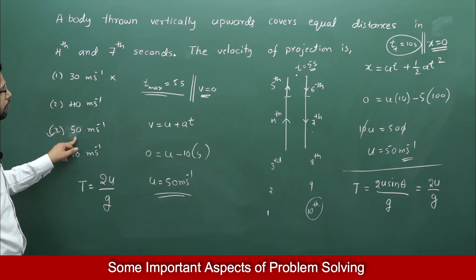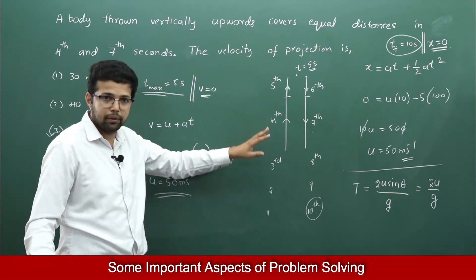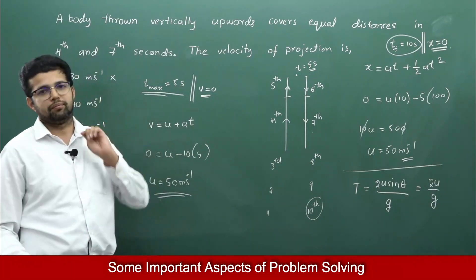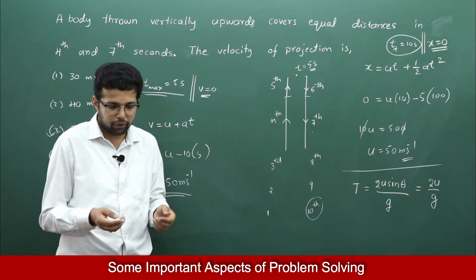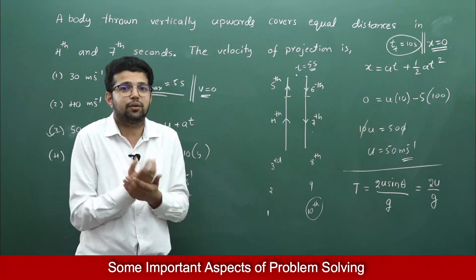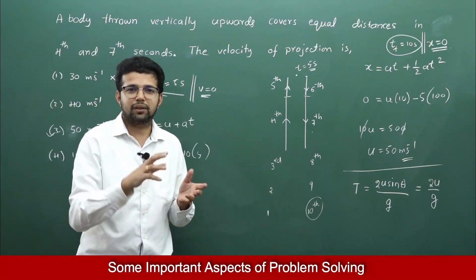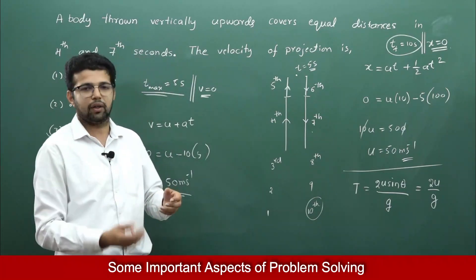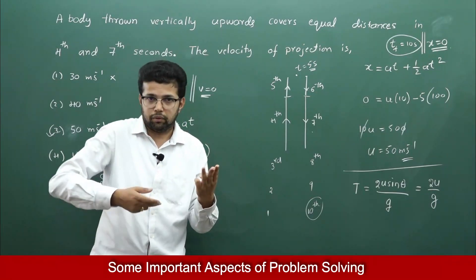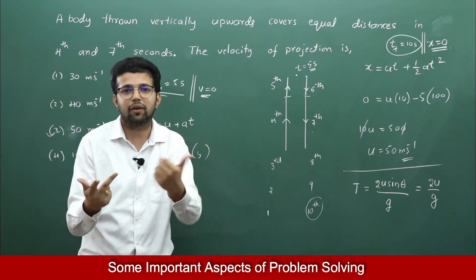During the 4th second the object was going upwards, and for a little time after that the velocity of projection must be greater than 40 m/s. Why? If you throw an object upward with 10 m/s, in 1 second velocity becomes 0, because acceleration due to gravity reduces velocity by 10 m/s every second. For example, if projection velocity is 30 m/s: at t = 1 it's 20, at t = 2 it's 10, at t = 3 it's 0.